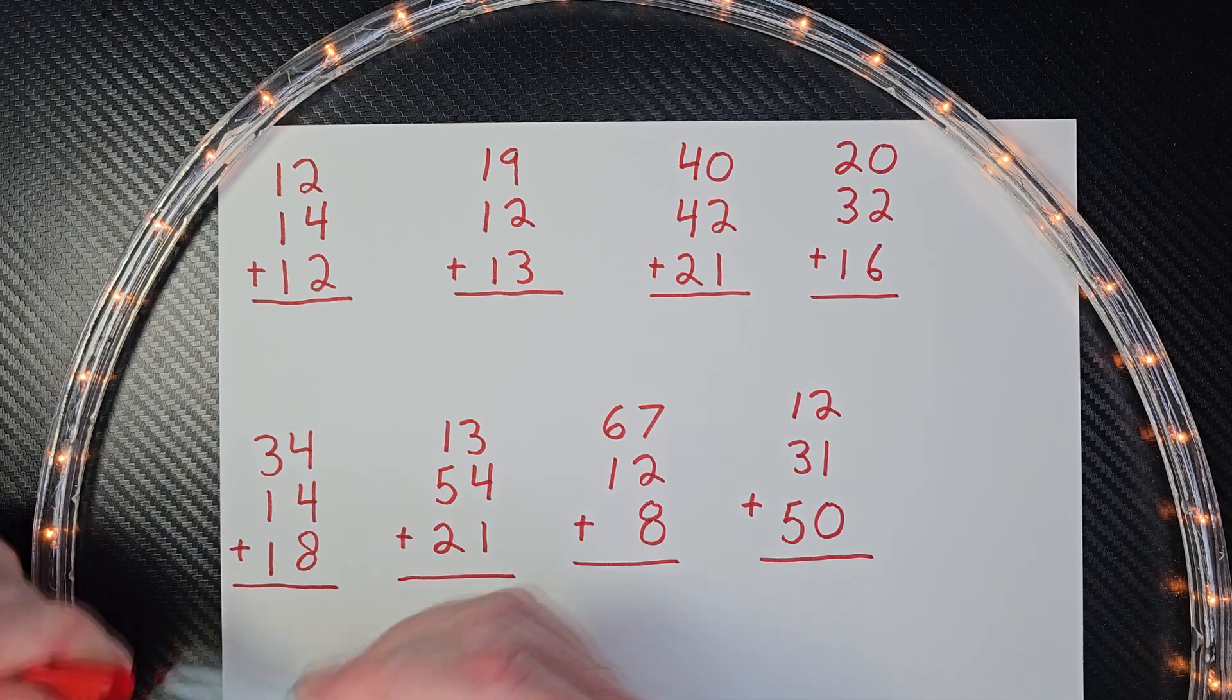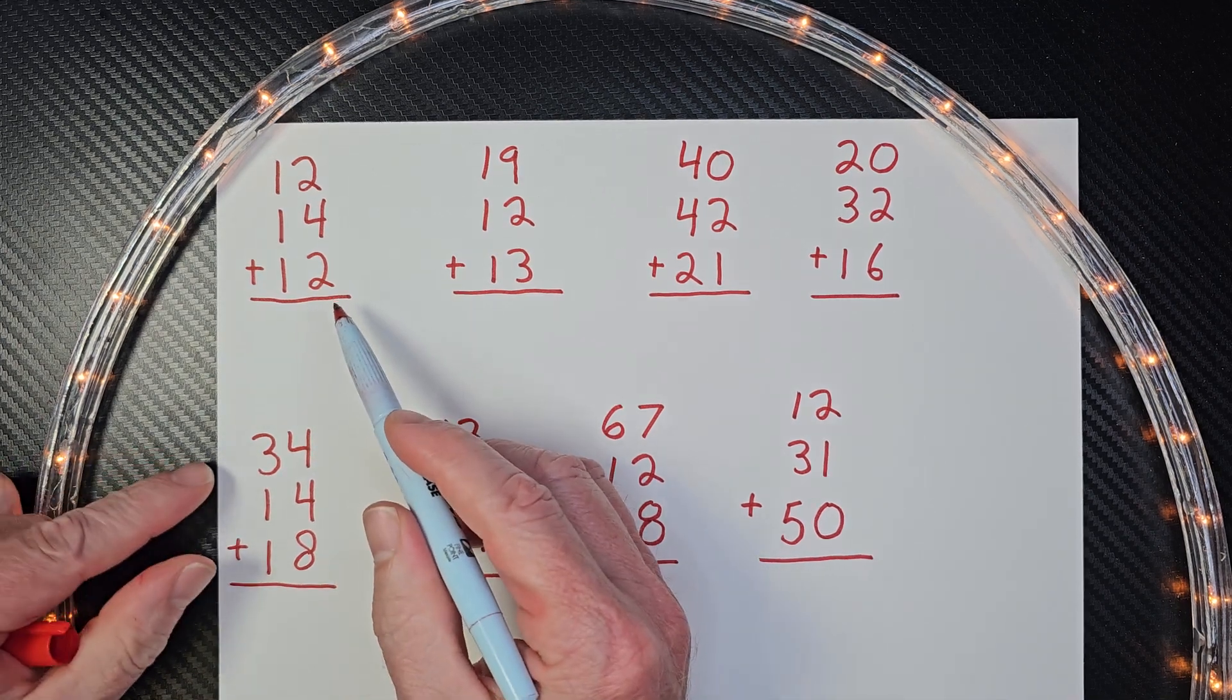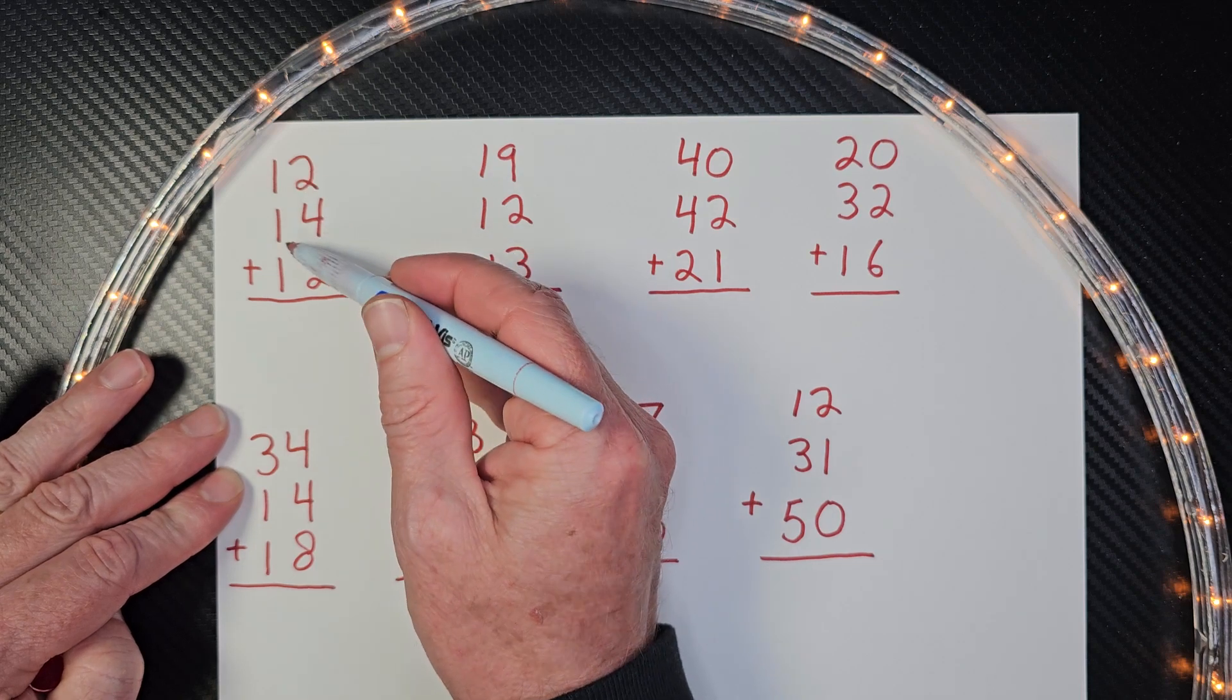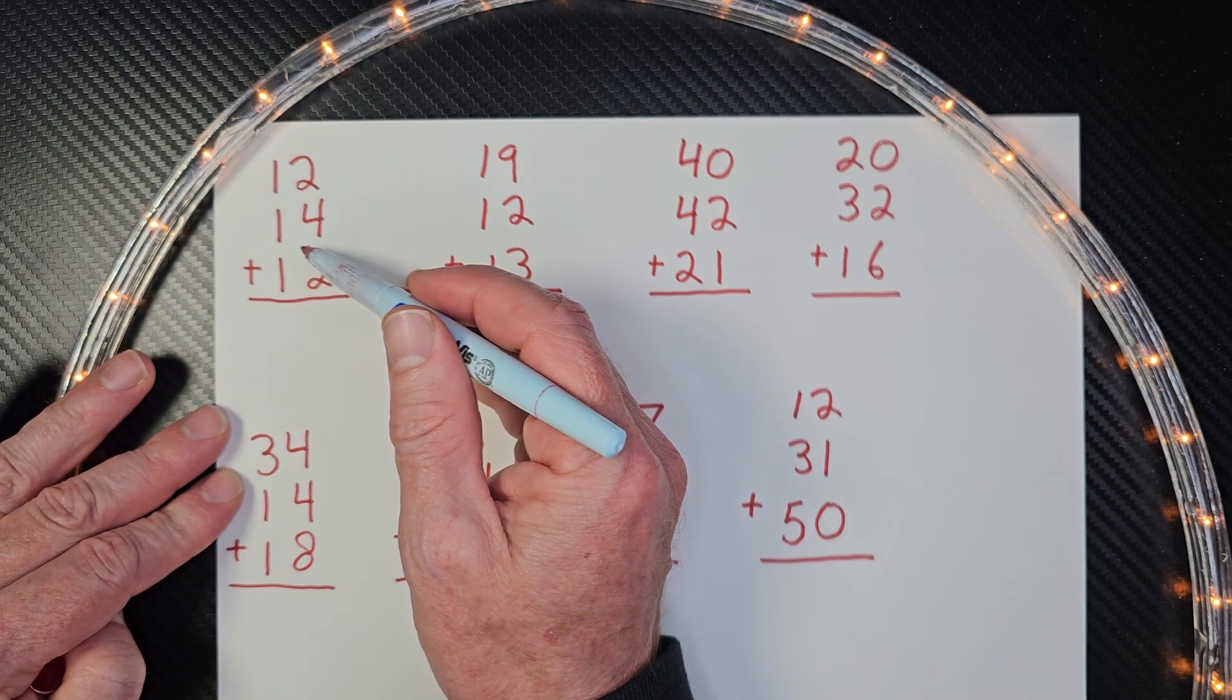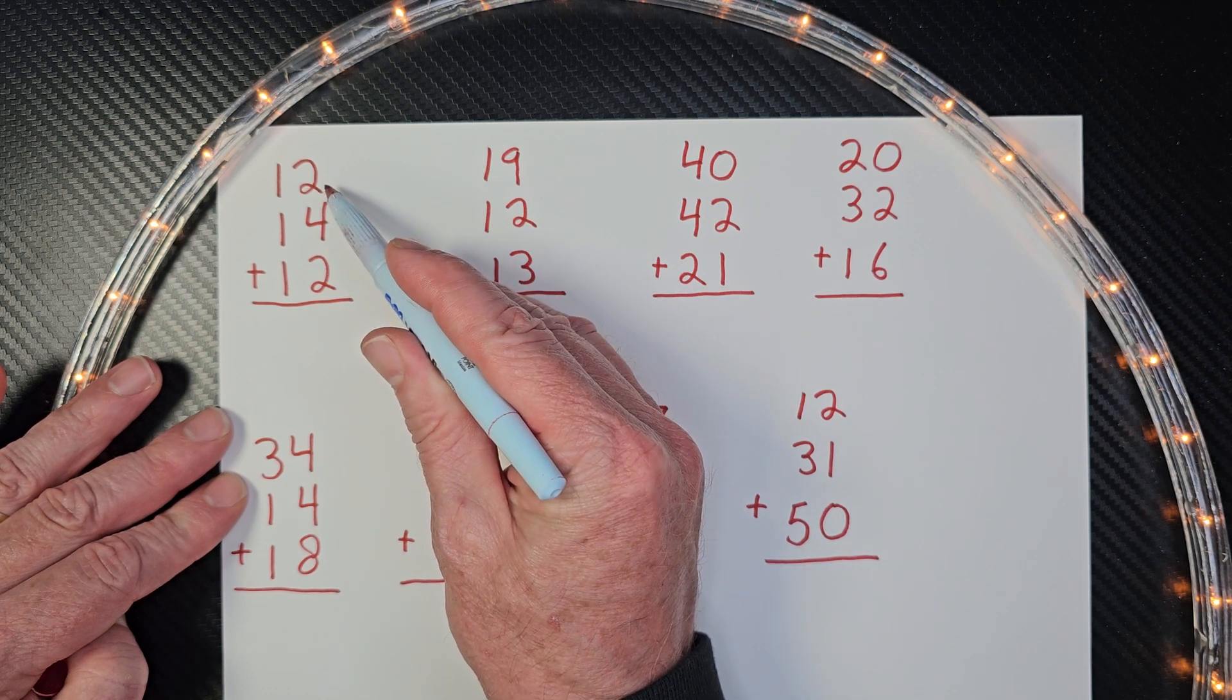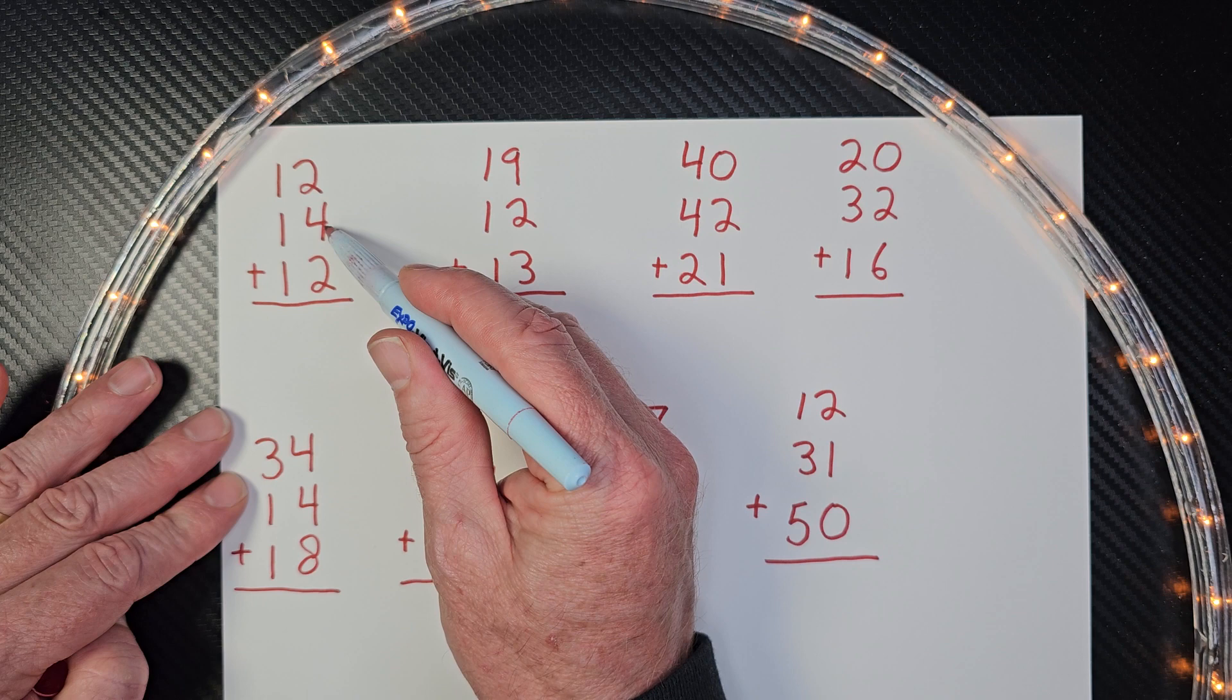All right, let's begin here. So first of all, what we do is we always add the ones first. This is the ones column and this is the tens column. So we go ahead and add the ones first. So I'm going to go ahead and add two plus two is four and then four plus four would be eight.